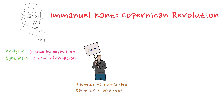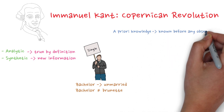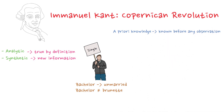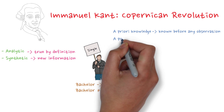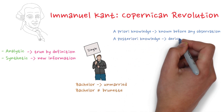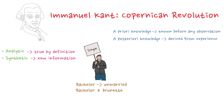These statements expand our knowledge, but are not necessarily true in all cases. In addition to analytic and synthetic statements, Kant introduced another crucial distinction: a priori and a posteriori knowledge. A priori knowledge is independent of experience — it is known before any observation. A posteriori knowledge, on the other hand, is derived from experience. Revisiting 'A bachelor is unmarried,' we see that it is both analytic and a priori, because it is necessarily true and independent of experience.